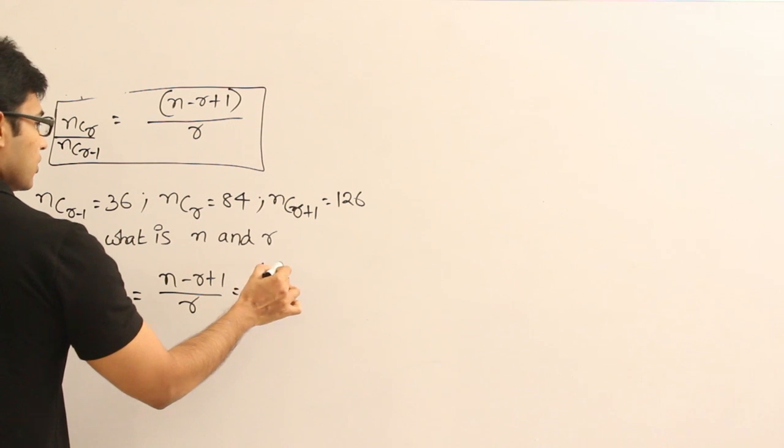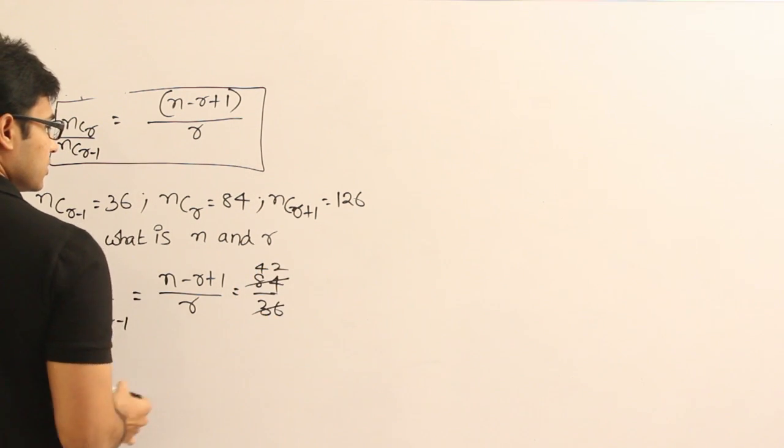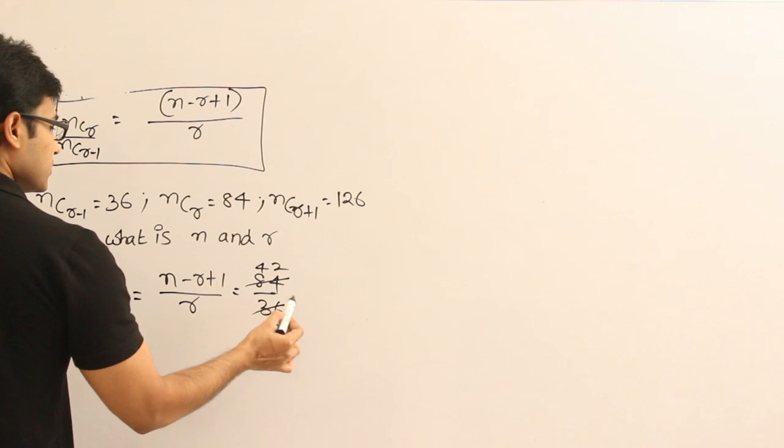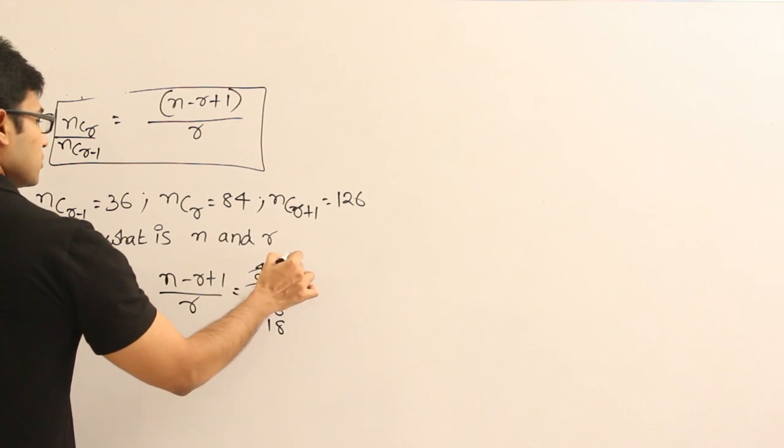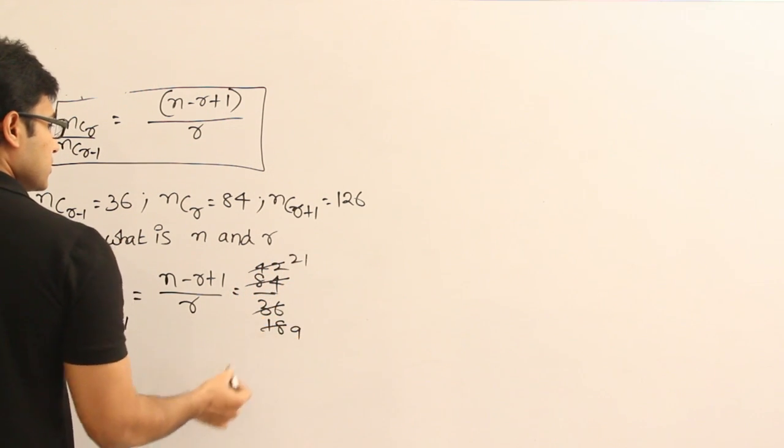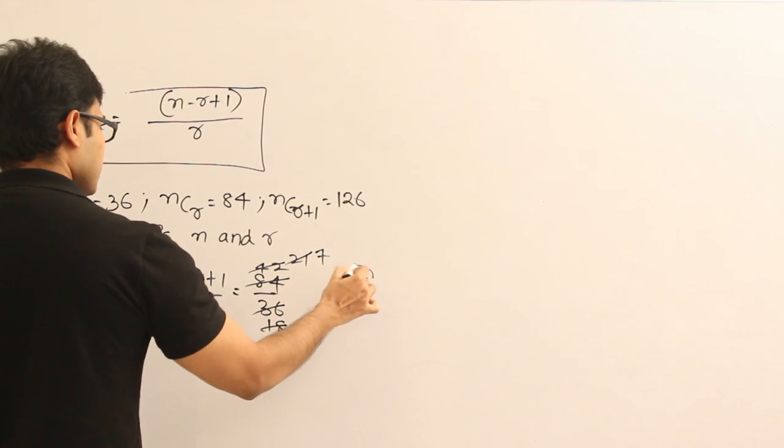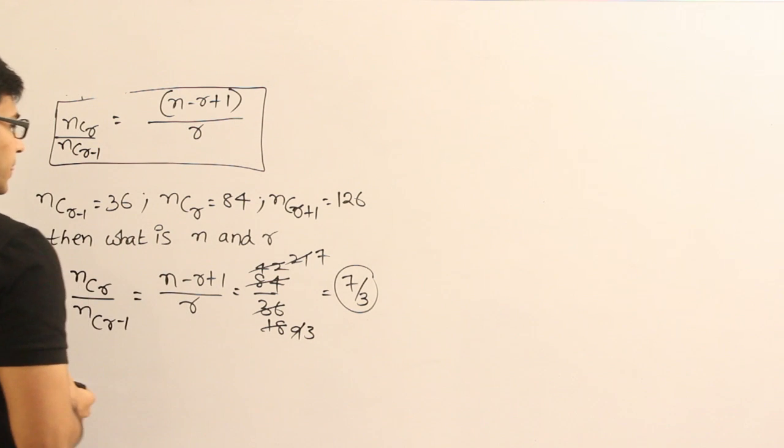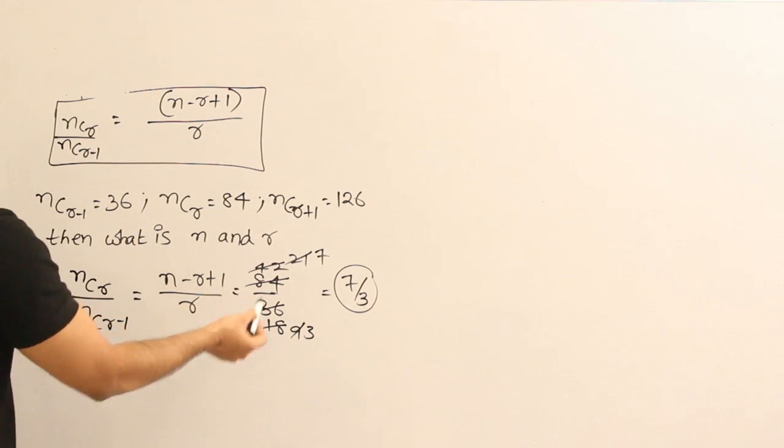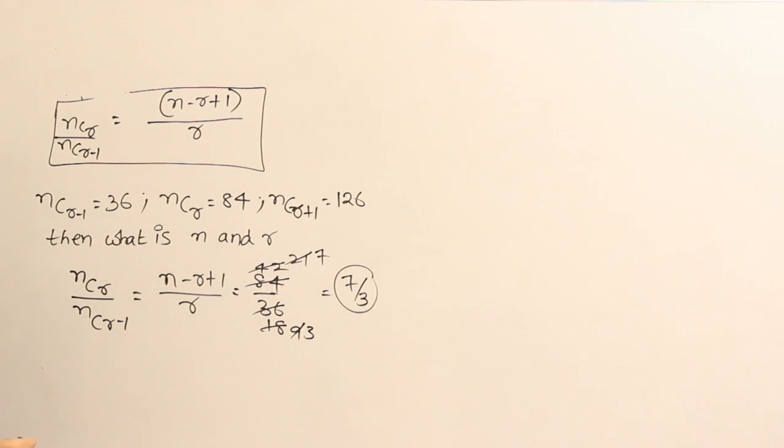So 2 goes into both 42 times, 2 into 18, 2 into 9, 3 into 7, 3 into 3... so that is equal to 7 by 3. I could have directly done it with 3 or even with 12. So let's see this one.